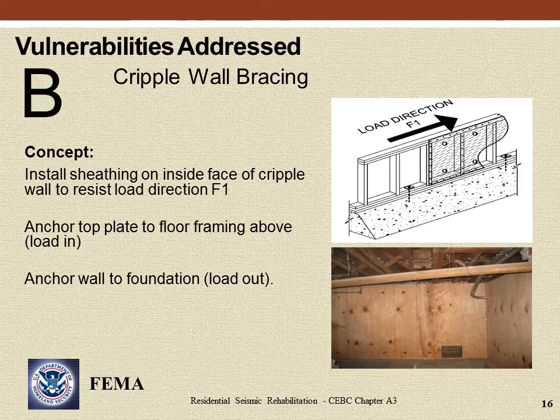The arrow labeled F1 shows the direction of earthquake loading. The seismic rehabilitation concept is to install plywood or OSB sheathing on the face of the cripple wall. Plywood or OSB is most often installed on the inside face from the crawl space since there are generally no finished materials in the way, though installation on the exterior face is equally acceptable — finished materials must be removed and then reinstalled over the plywood or OSB. In addition to the sheathing, it is important to install connections from the top of the cripple wall to the framing above and from the bottom to the foundation.